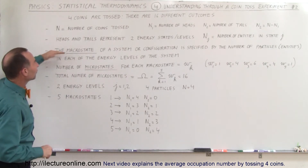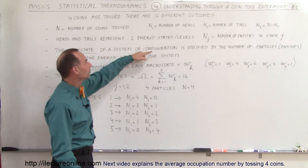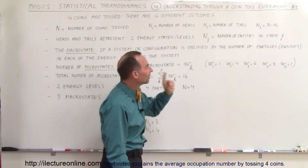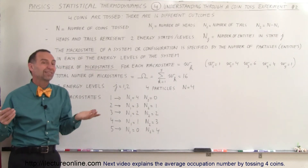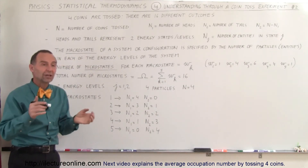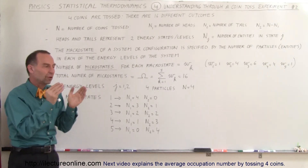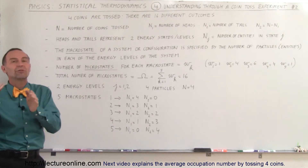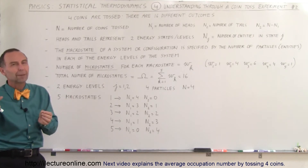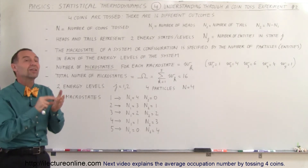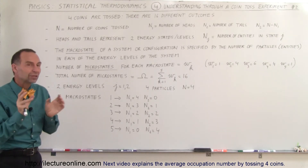The macro state of a system, or configuration, is specified by the number of particles or entities in each of the energy levels of the system — in this case, either heads or tails. Each macro state is defined by how many entities fall in one state and how many in the other, even though there may be many arrangements in which that can happen. A microstate is simply the number of entities in each of the states, and we don't care about which specific ones.